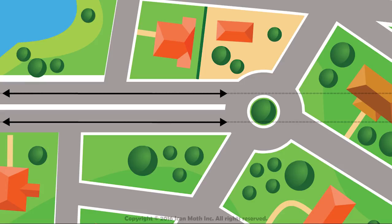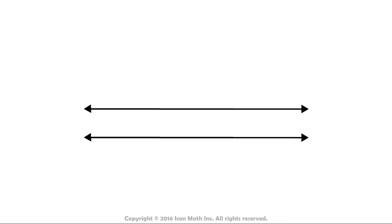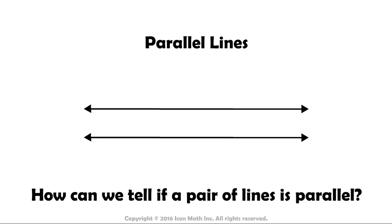A pair of lines that don't intersect at any point is called parallel lines. But how can we tell if a pair of lines is parallel, especially that lines go on forever? Well, there is a way to check.